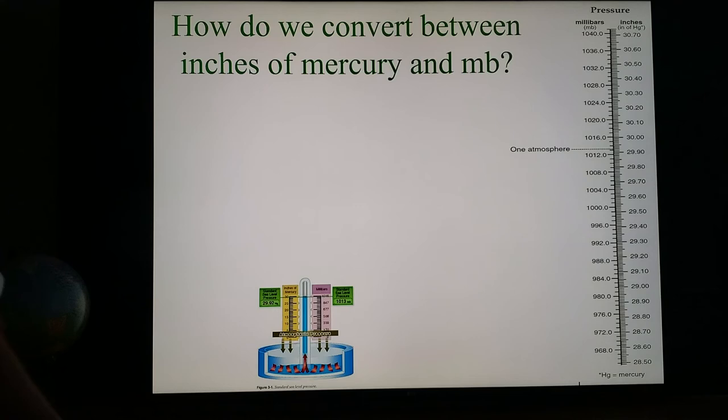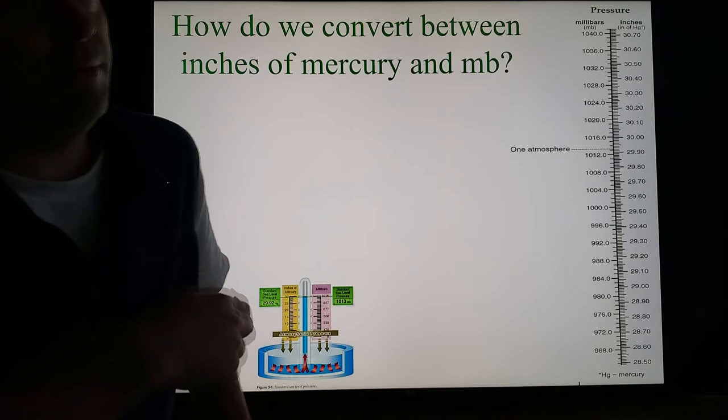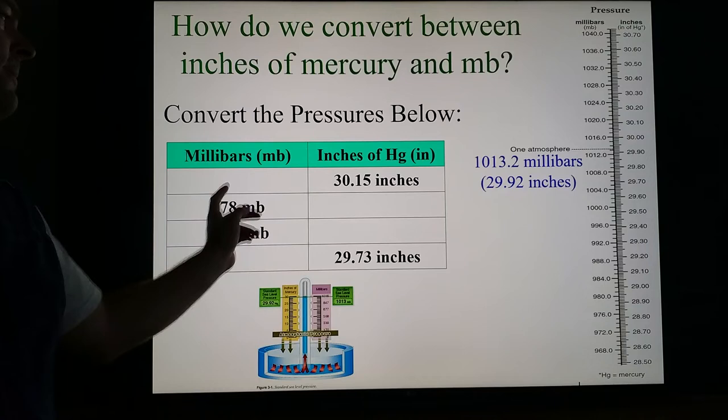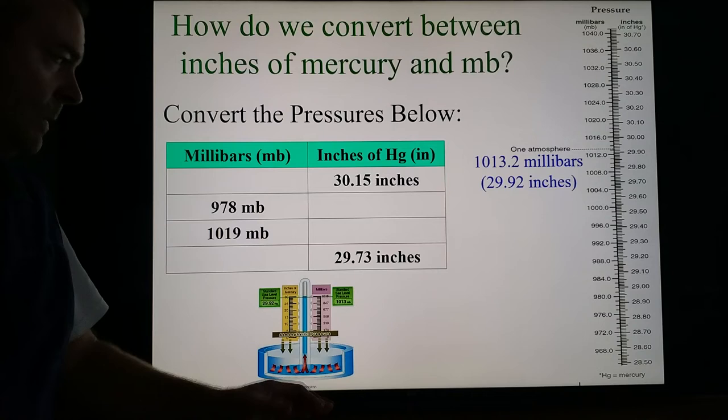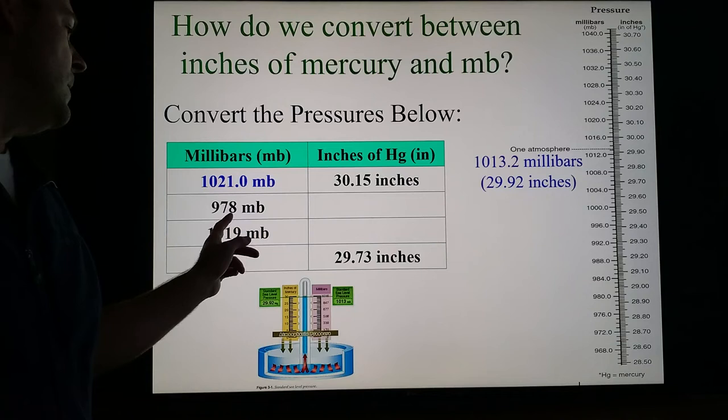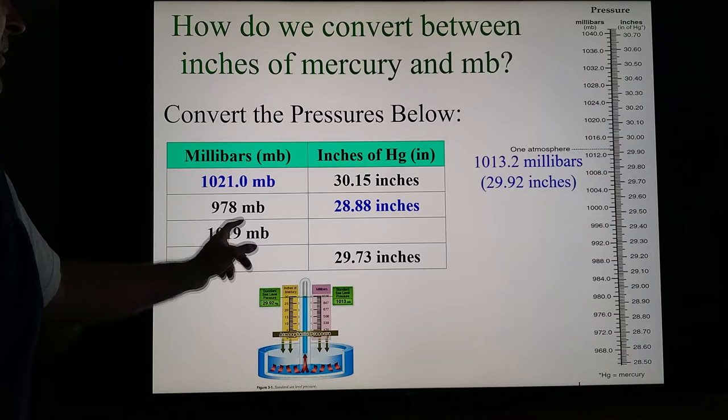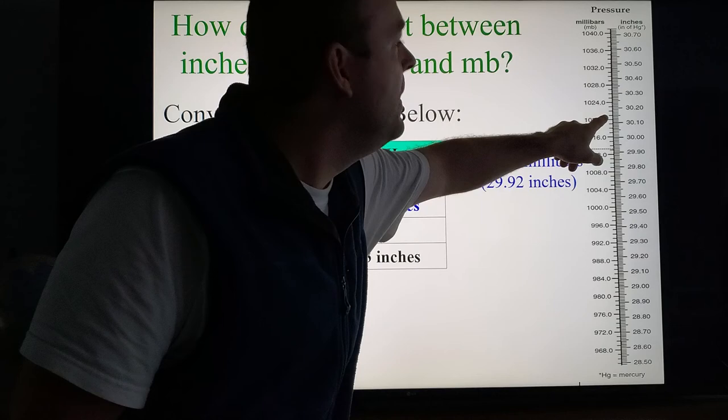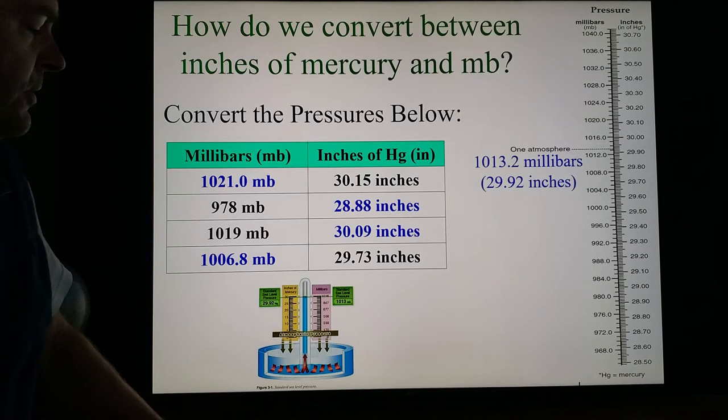Converting between inches of mercury and millibars is just like converting temperatures that we did last week. You just got to go opposite sides of the line. On the left side is millibars, on the right side is inches. Take a minute, try to fill out this chart using that scale. Hopefully for your first one, you came up with 1021. For your second check, I hope you came up with 28.88. If you look, 978, find it over here, it's all the way down here if you go over. 28.88. For that first one there, 1021 millibars, well that would be here, scoot over and you get 30.15. And then you keep going. Check your answers on that.